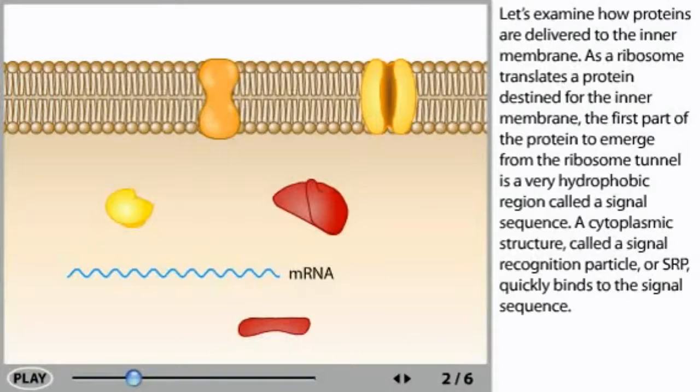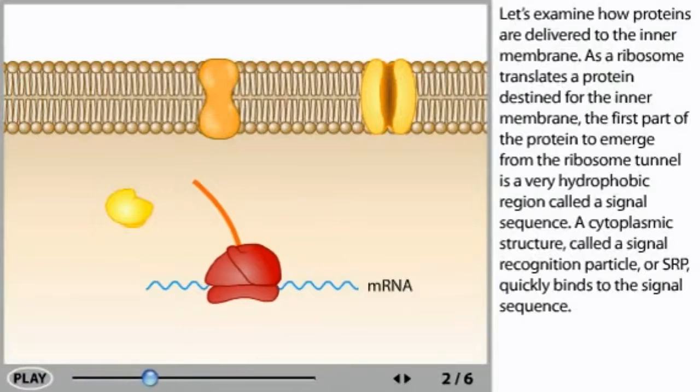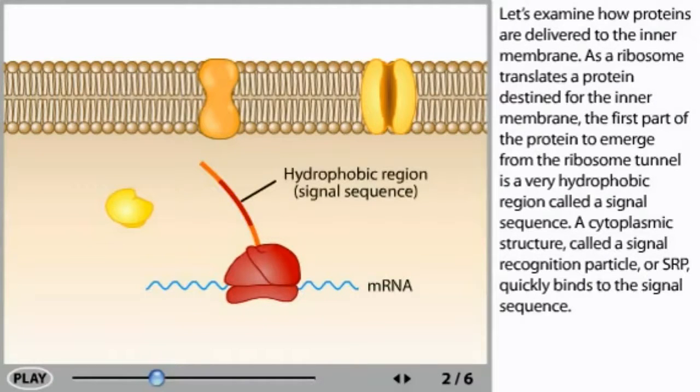Let's examine how proteins are delivered to the inner membrane. As a ribosome translates a protein destined for the inner membrane, the first part of the protein to emerge from the ribosome tunnel is a very hydrophobic region called a signal sequence.